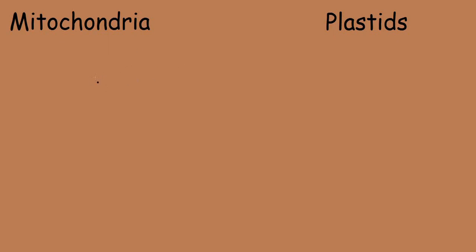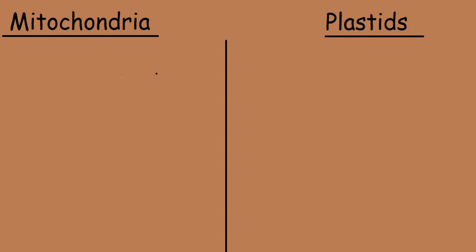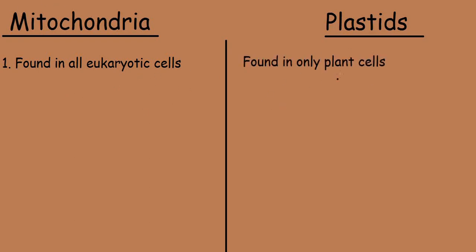Let's study the differences between mitochondria and plastids. I will draw a line in between to make these differences more clear. The first point: mitochondria is found in all eukaryotic cells, and plastids are found only in plant cells.